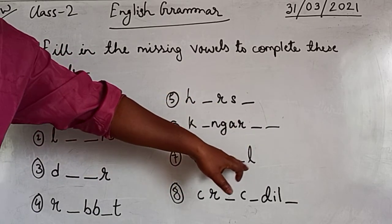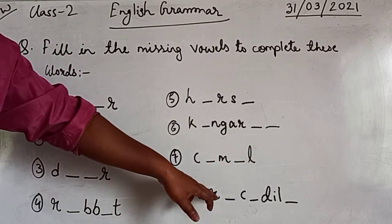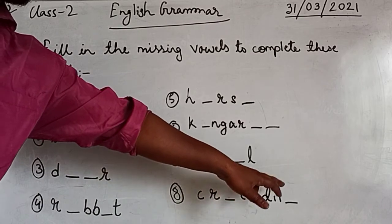Number 7: C dash M dash L. Number 8: C, R dash C dash D, I, L dash.